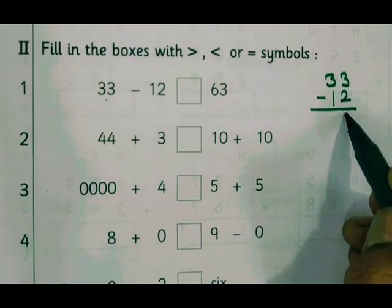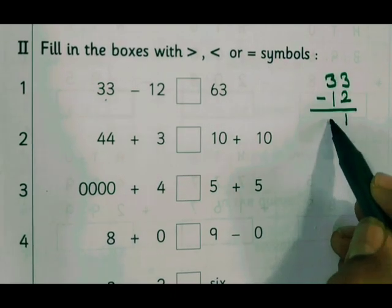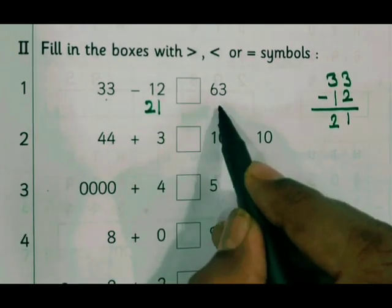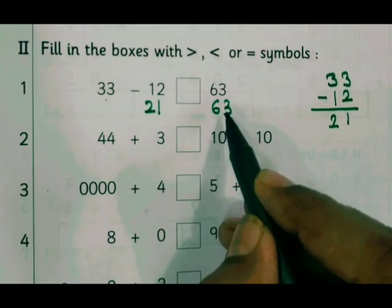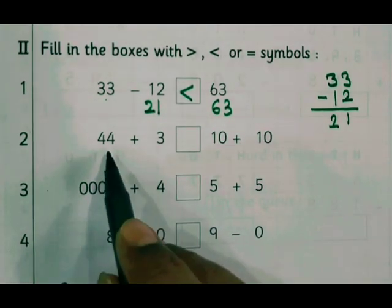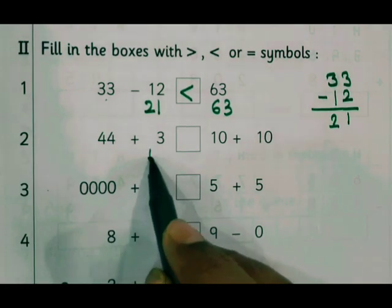33 minus 12: 3 minus 2 is 1, 3 minus 1 is 2, that is 21. 21 here, 63 there. Therefore 21 is less than 63. Next: 44 plus 3 is 47.